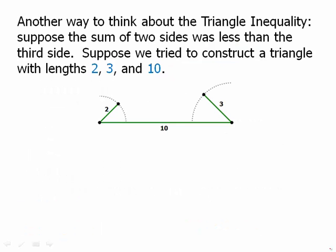Another way to think about the triangle inequality. Suppose the sum of two sides was less than the third side. Suppose we tried to construct, say, a triangle with lengths 2, 3, and 10. So here's a scaled diagram, and you can kind of see there's a problem here.